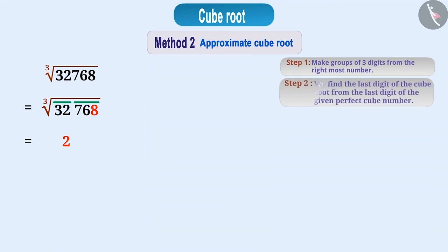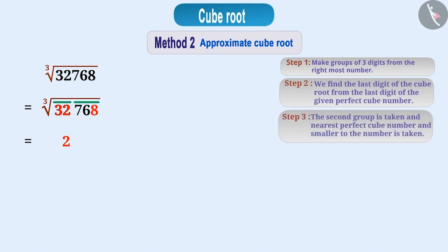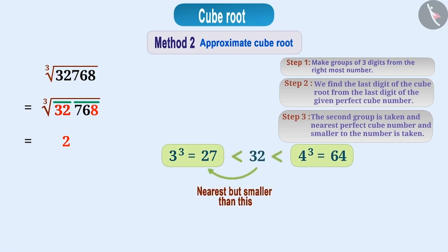The unit of the cube root will be 2. Similarly, we find the last digit of the cube root from the last digit of the given perfect cube number. Step 3. Now in the third and final step, we take the second set of digits. This gives the number 32 as result. Then we find the nearest perfect cube number and smaller to the number. If we take a look at 32, 3 cube that is 27 and 4 cube that is 64. Therefore, from 32, the nearest but smaller perfect cube is the number 27. Then we will write the cube root of this perfect cube, 27, to the tens of cube roots of the given number. The number thus obtained is 32 is the cube root of this number 32,768.